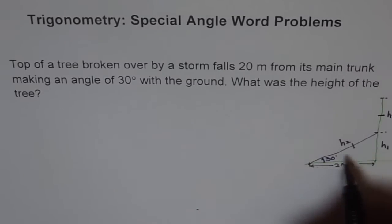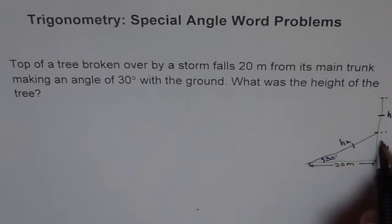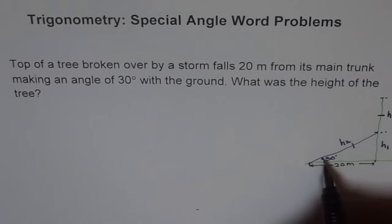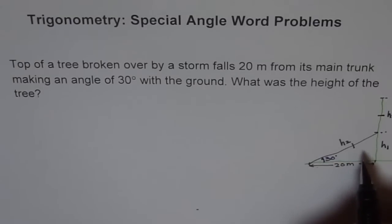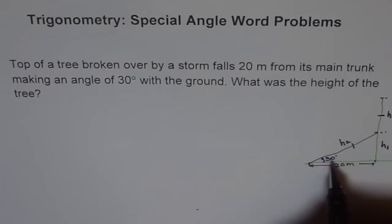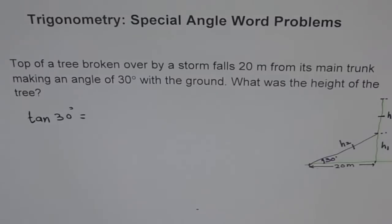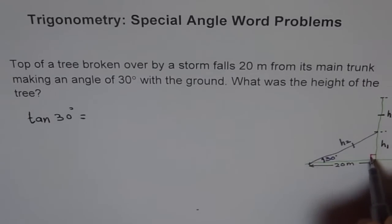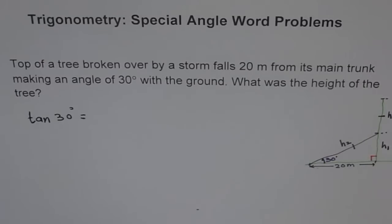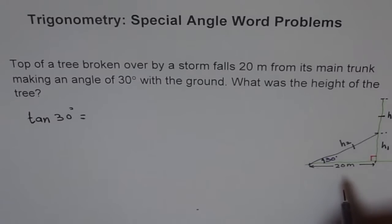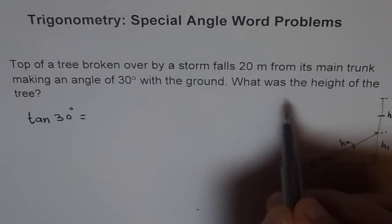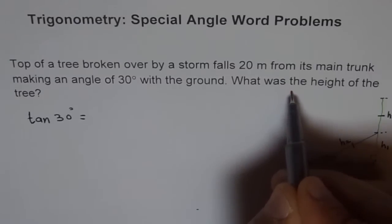This angle is given to us and this is the base — that's the opposite side. If you know the base, the opposite side, and the angle, then the trigonometric ratio you should use is tan. So tan of 30 degrees — we assume the tree was absolutely straight and therefore this is a right angle triangle. Now 30 degrees is a special angle. Let me draw a special triangle here.